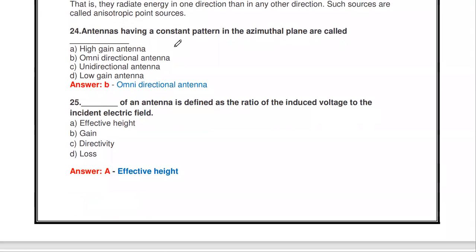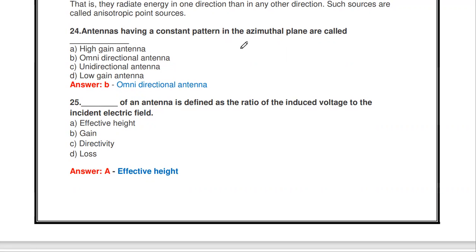The next question: antennas having a constant pattern in the azimuthal plane are called high gain antenna, omnidirectional antenna, or low gain antenna? The answer is omnidirectional antenna — antennas with a constant pattern in the azimuthal plane are called omnidirectional antennas.